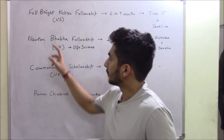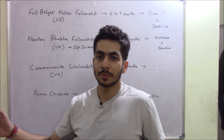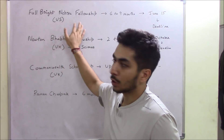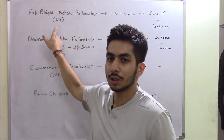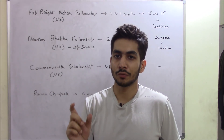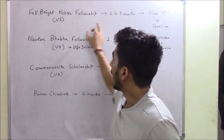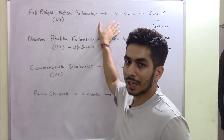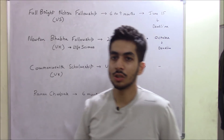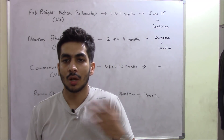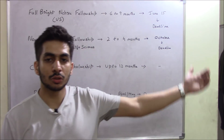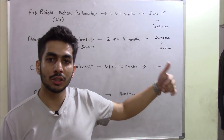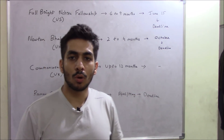For Indians specifically, there is the Fulbright-Nehru Fellowship — one of the most prestigious fellowships. This is for institutes in the US only, so you can do a short part of your PhD at a US institute. The duration is six to nine months, and the deadline is generally June 15th of each year. So for the 2020 program, the deadline will be in June of next year.